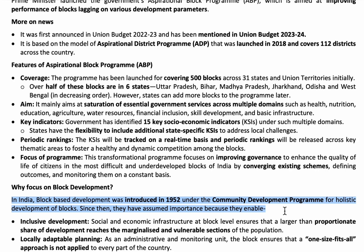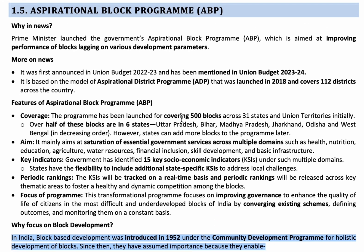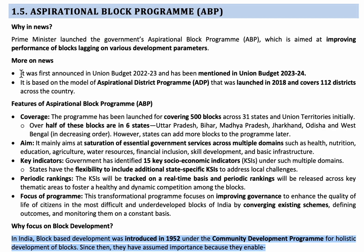In the year 2018, under the Aspirational District Program, 112 districts were covered. The same model was again introduced in the 2022-23 budget and also the 2023-24 budget. Under this program, 500 blocks have been identified across 31 states and union territories initially.